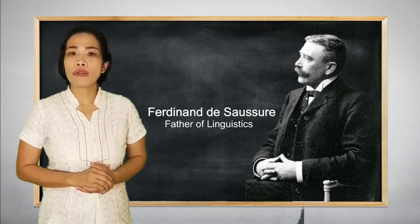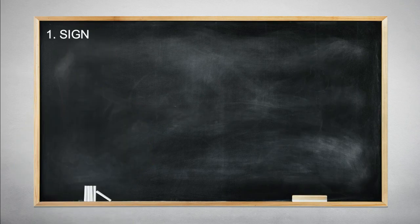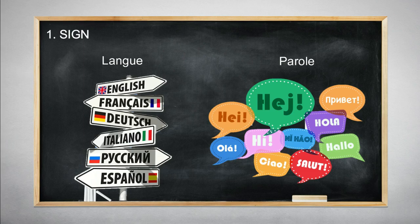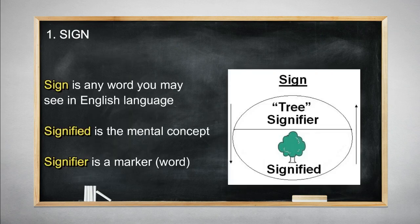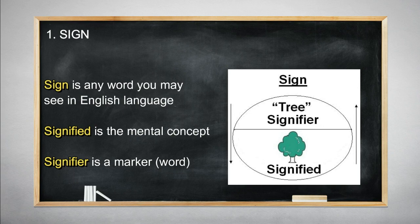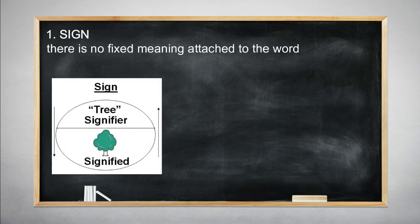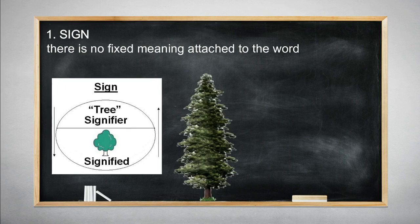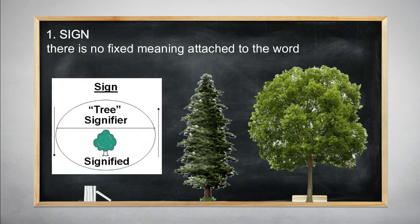One: sign. Saussure argued for a distinction between langue and parole. Langue is an idealized abstraction of language, while parole is the language as actually used in daily life. He argued that a sign is composed of a signified and a signifier. A sign is any word you may see in English language. The signified is the mental concept that a signifier refers to, while the signifier is a marker like a word that refers to a specific concept. For instance, the signifier is 'tree' — you might think of a pine tree or any other tree, but I'm thinking of a narra tree. The word 'tree' may ring different mental concepts, hence there is no fixed meaning attached to the word.